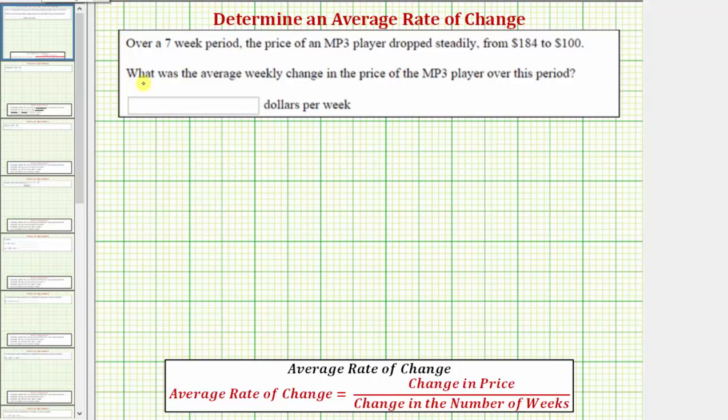Let's go ahead and write this as the average weekly change in price equals, for the change in price, we use delta p, where delta represents change, divided by, for the change in the number of weeks, we'll use delta w.